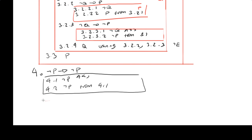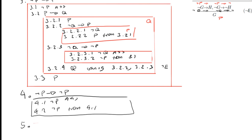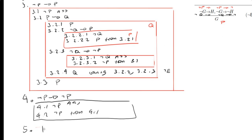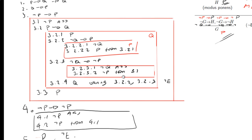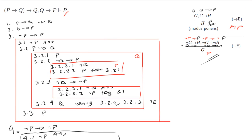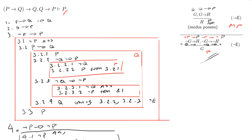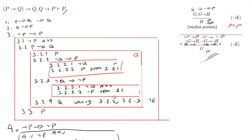Then line number five: I can say P, because I've got not P implies P, which I've done, and I've got not P implies not P. Therefore I can get P, and the rule is negation elimination. So you guys can see the full proof — copy it down and learn this stuff.